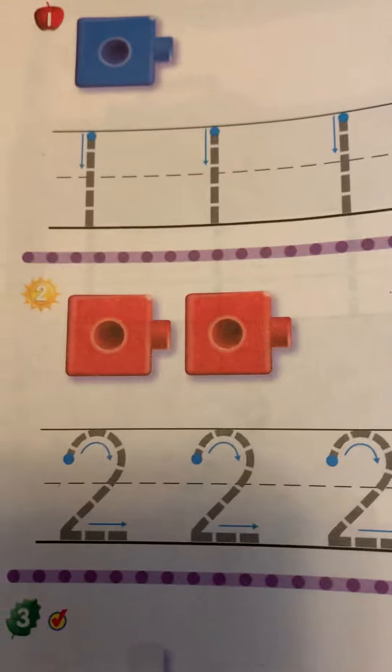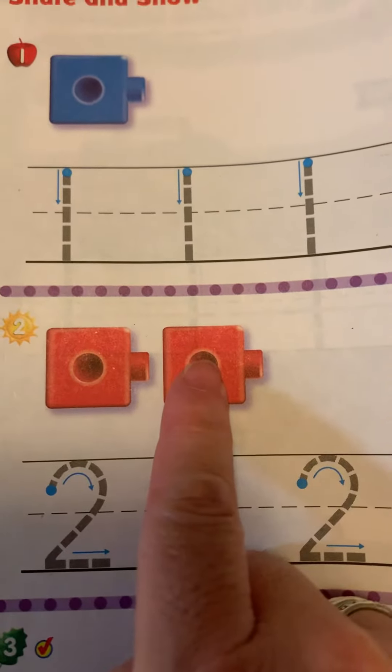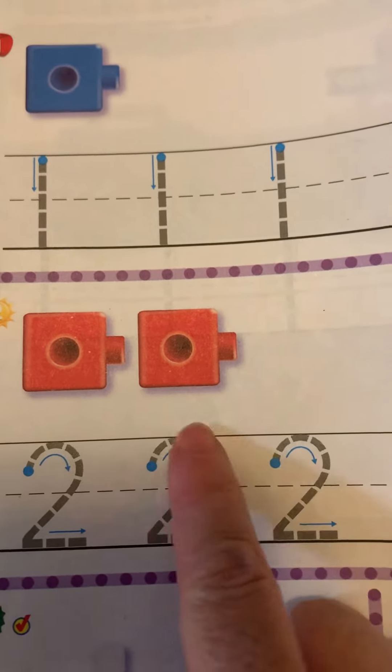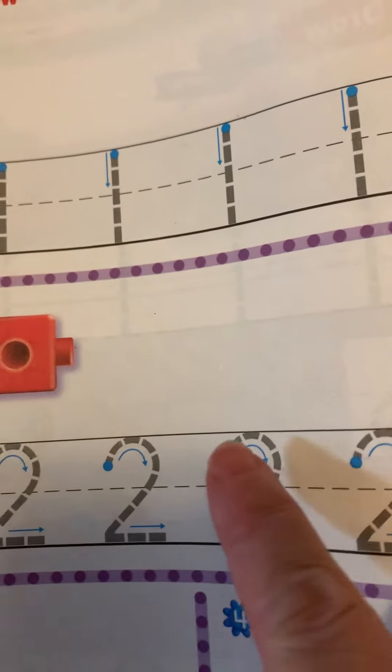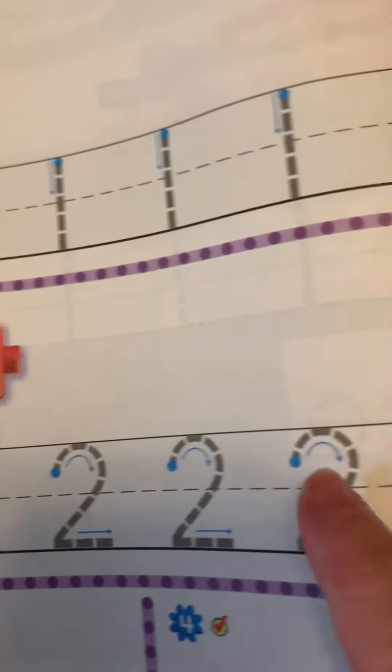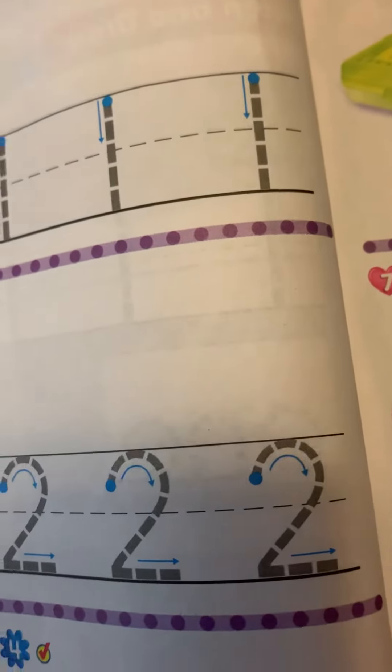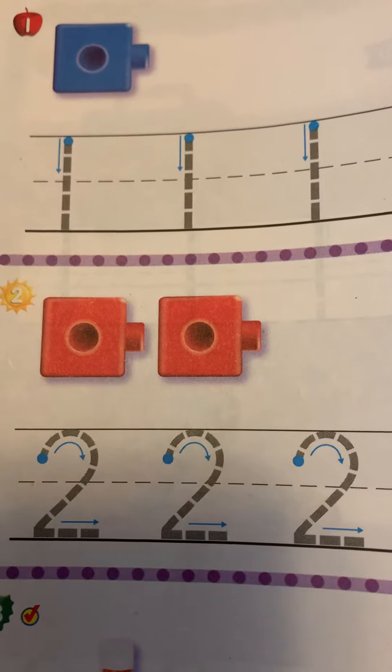Now, let's count the red cubes. One, two. Trace the number two with your finger and say two. Two. Go back and trace it with your pencil.